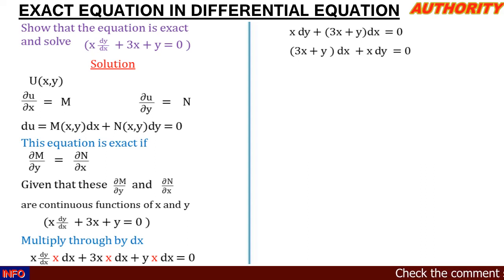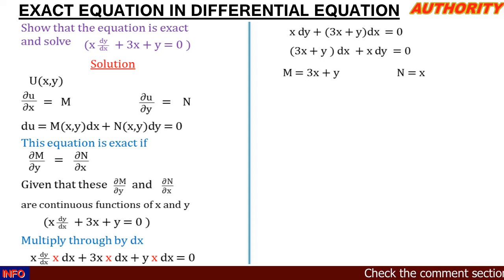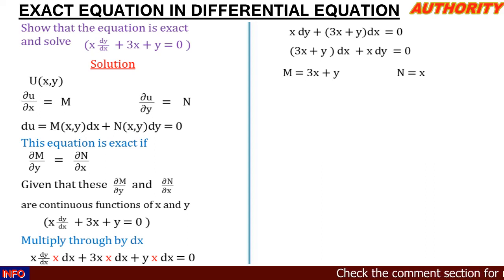Now it's easy to identify our M and N. The part having dx is (3x + y), so we say M = 3x + y. The part having dy is x, so we say N = x.